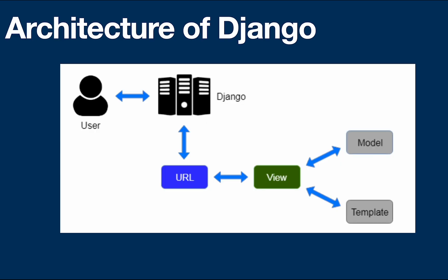Django follows MVT architecture, which means Model, View, Template. Model stands for the database tables. Views are used to execute the business logic and interact with a model to carry data, and finally render a template. Template means an HTML page — it is the presentation layer which handles the user interface part completely.